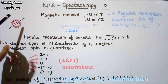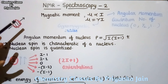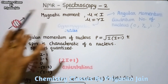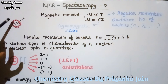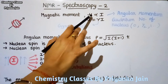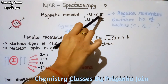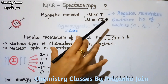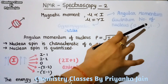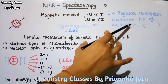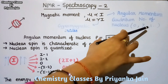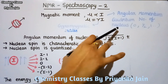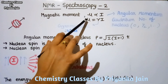In NMR spectroscopy, when a charged particle spins on its own axis it will have a magnetic moment associated with it, which we call mu. This magnetic moment is directly proportional to I, where I is called the angular momentum quantum number of the nucleus. It is a characteristic of the nucleus — for example, its value is half for the proton, zero for certain nuclei like C and O, and 1 for nitrogen. Values may be 1/2, 1, 3/2, 5/2, or 0.